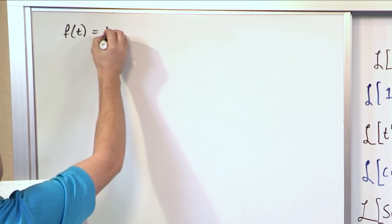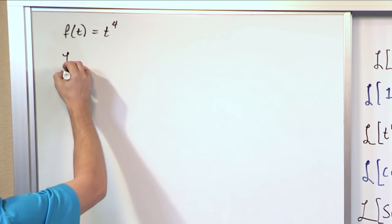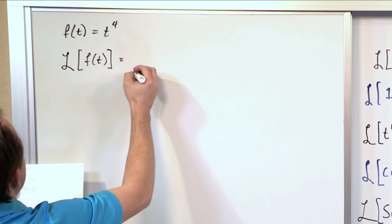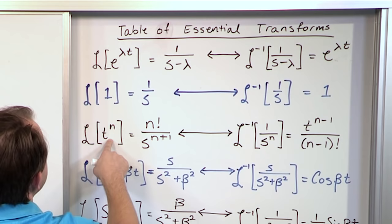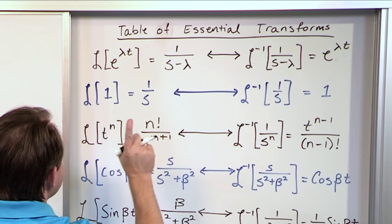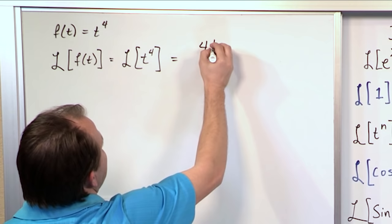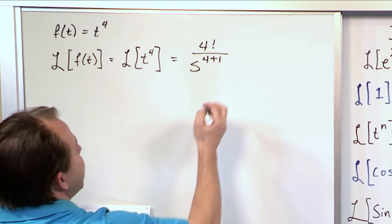So let's say that we want to find the Laplace Transform of the function of time, t to the fourth. So f(t) equals t to the fourth. The way you would do that on your paper is you would just say Laplace Transform of f(t) equals the Laplace Transform of t to the fourth. So how do you do that? You go over to your table of Laplace Transforms and say, is there anything that looks like that? Ah, t to the power of n. It's going to be n factorial over s to the power of n plus 1. In this case, n equals 4, so you have 4 factorial over s to the 4 plus 1.